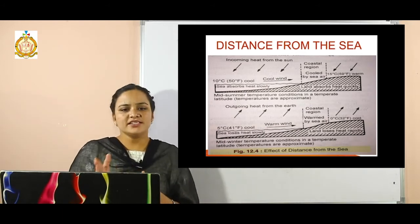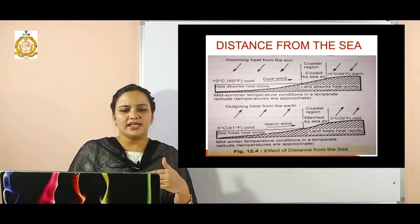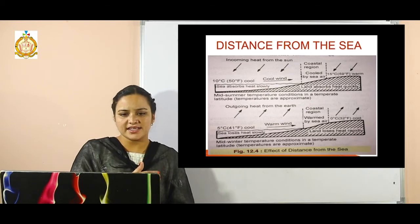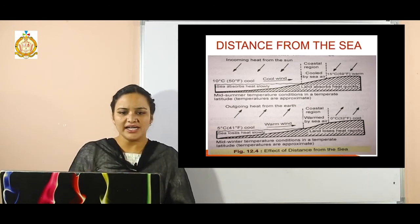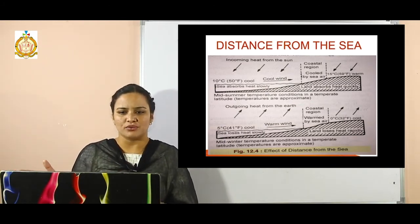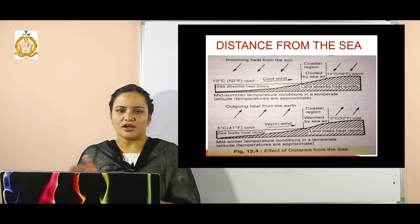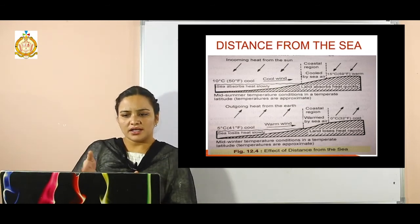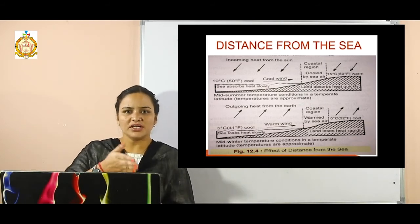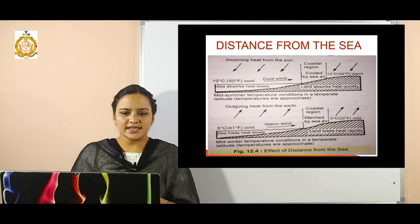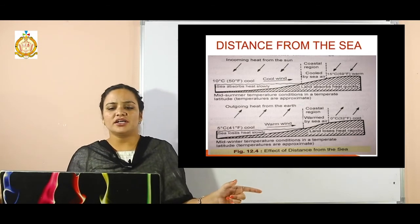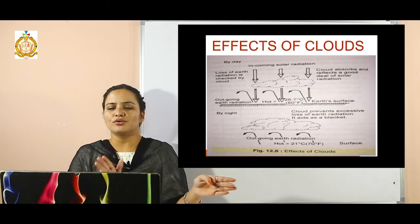Regarding distance from sea, the diagram clearly shows that areas near the sea absorb heat slowly. The water surface is at 10 degrees Celsius — which is 50 degrees Fahrenheit — so cool wind blows over it. When this wind moves to the land surface or coastal area, it becomes hot, with temperature rising from 10 to 15 degrees Celsius. If the sea temperature is 5 degrees Celsius, it automatically shifts to 0 degrees Celsius when moving to the coastal part.